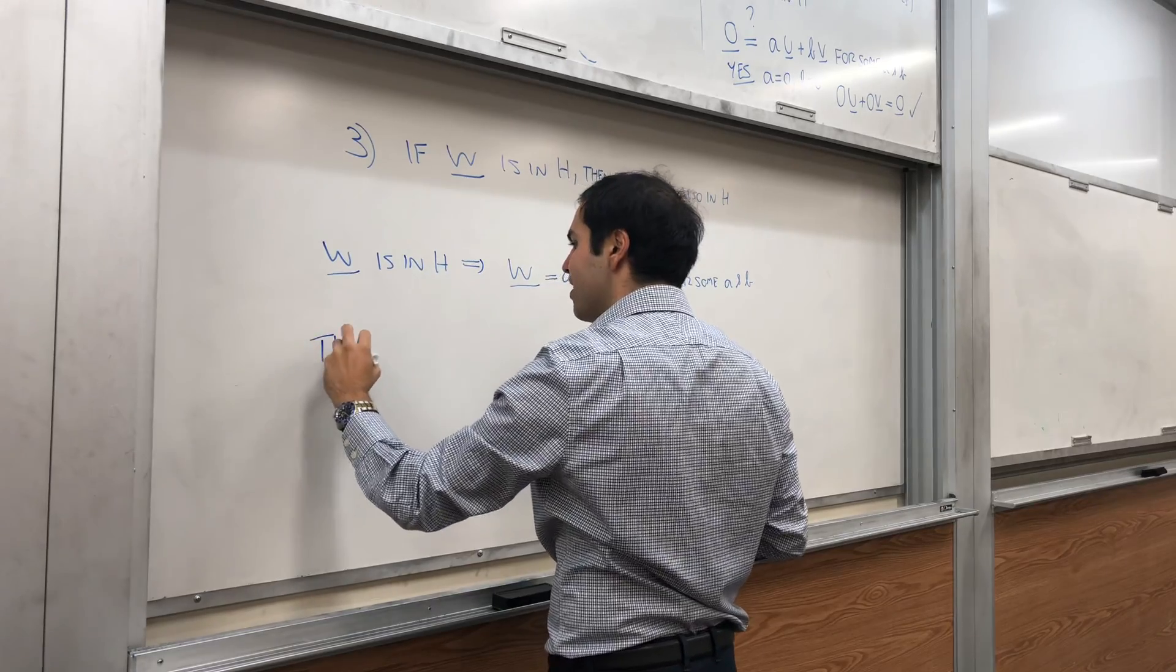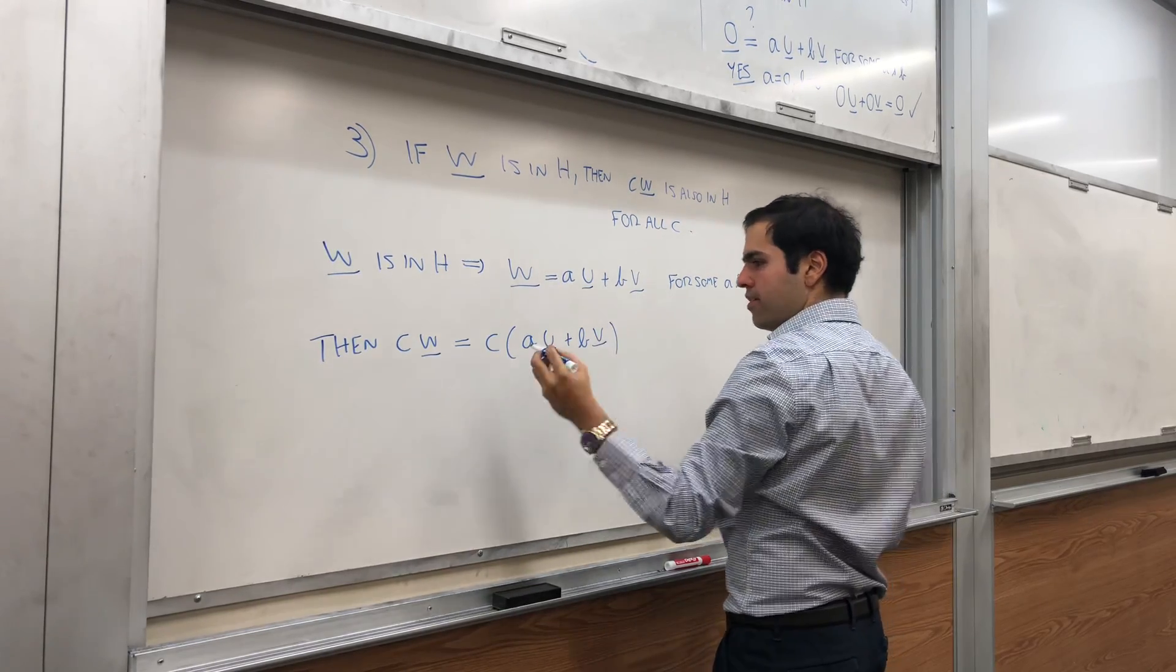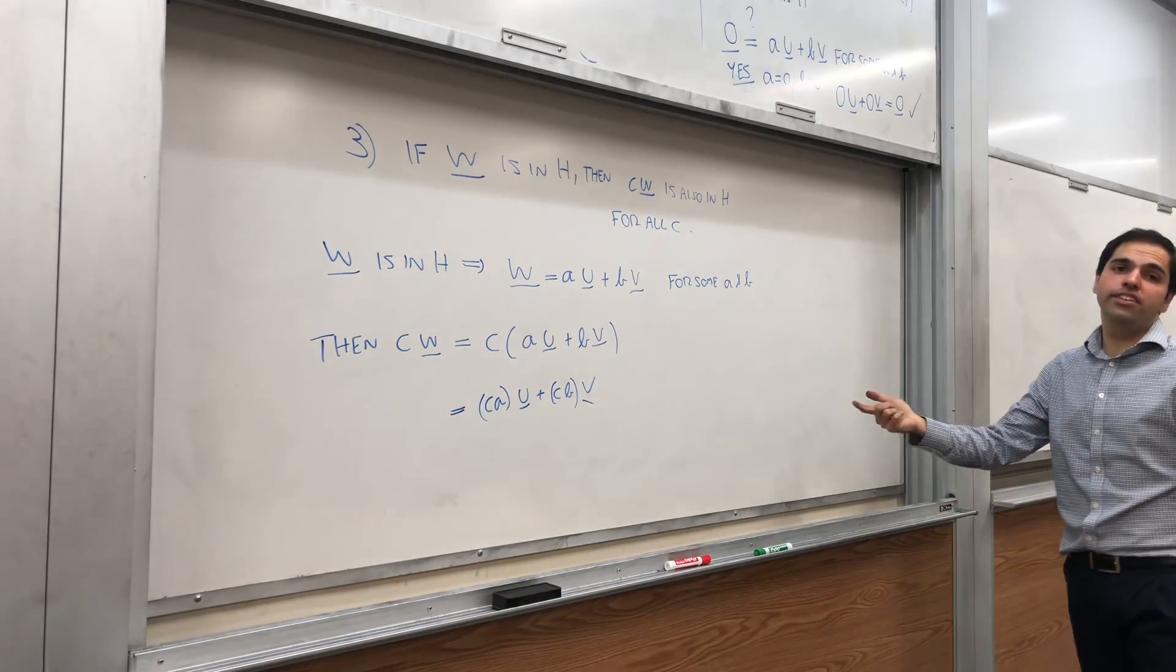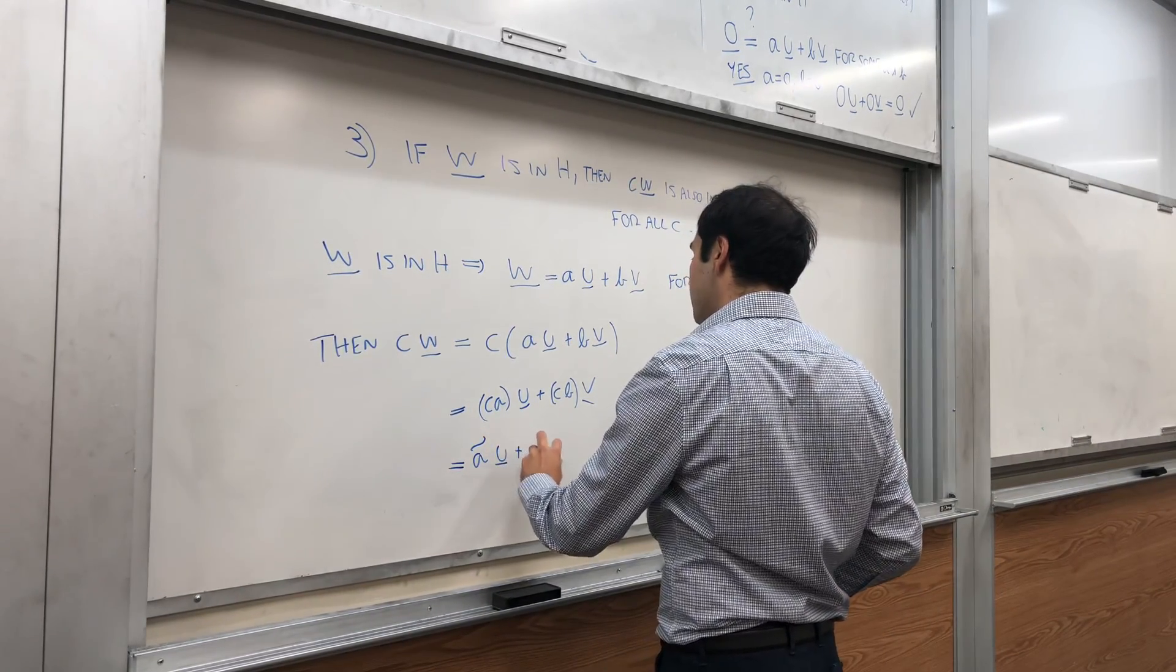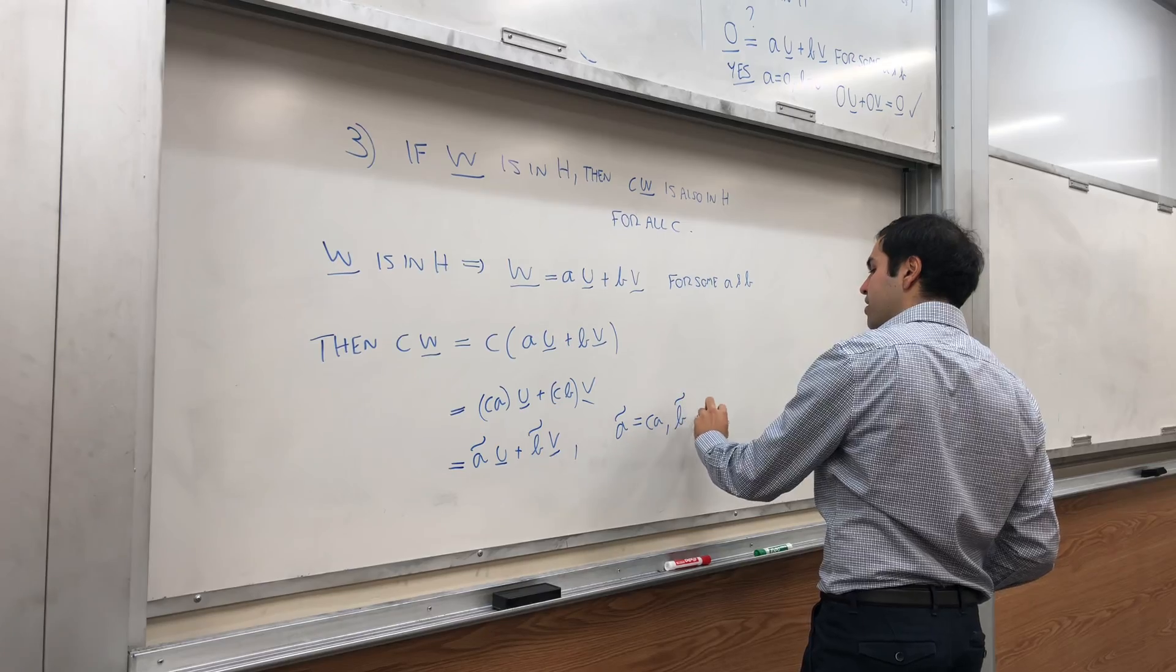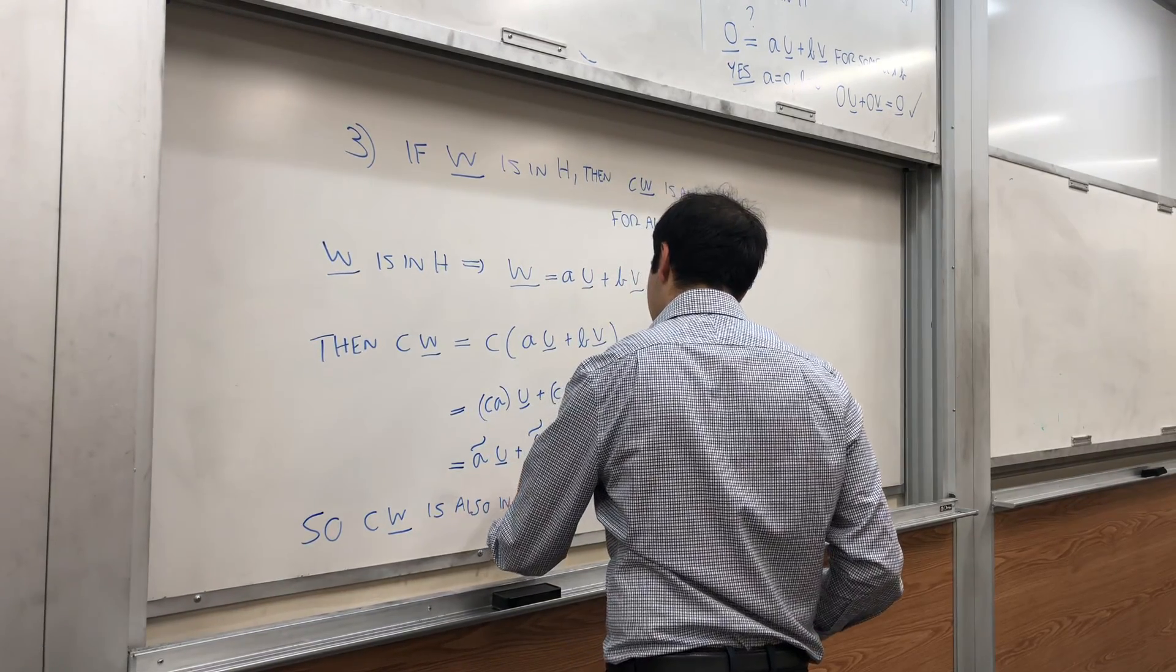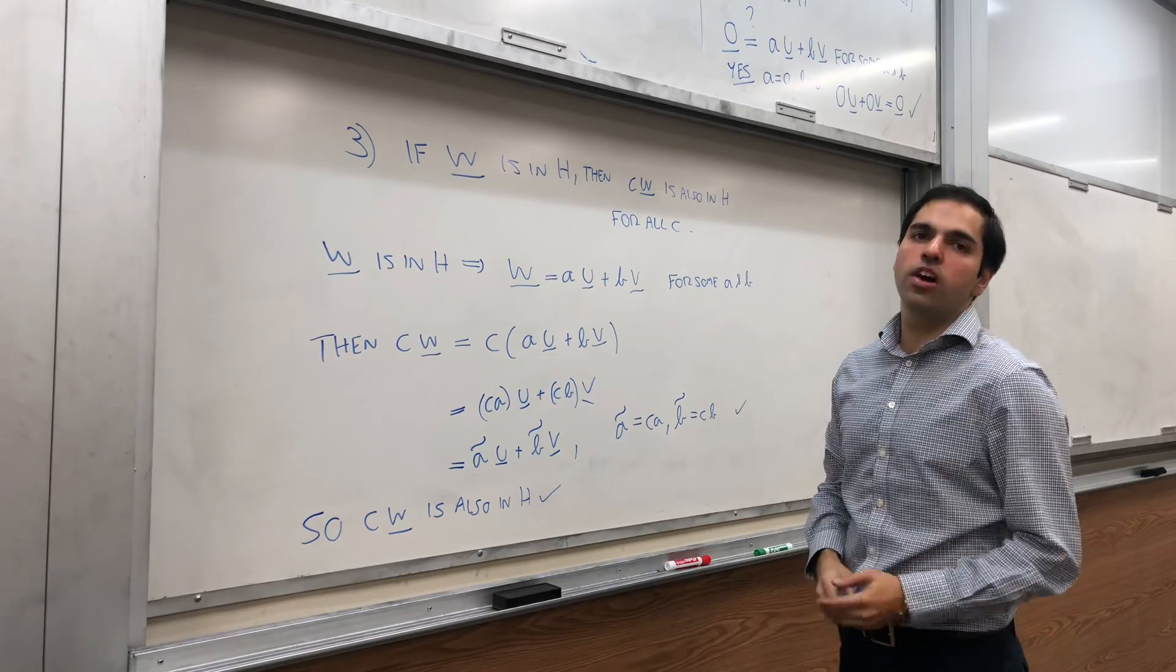And then, let's multiply W by C. That is C times AU plus BV. Now, just FOIL it out. CAU plus CBV. You can write it like this. And question, is this a linear combo of U and V? You betcha, because this is of the form A squiggled U plus B squiggled V, where A squiggled is CA and B squiggled is CB. And they're all real numbers. So, CW is also in H. That's precisely what we wanted to show. We assumed that W was in H, and we wanted to show that CW is also in H.